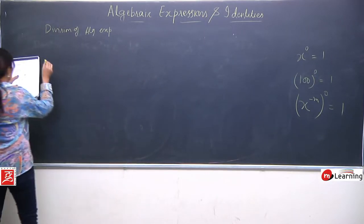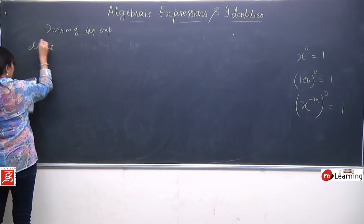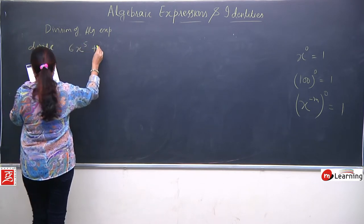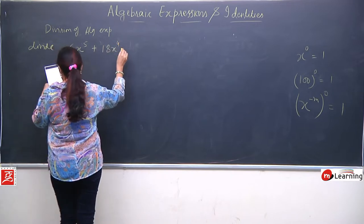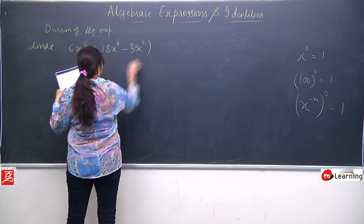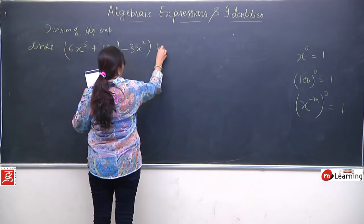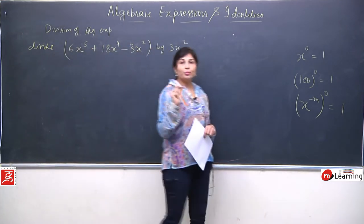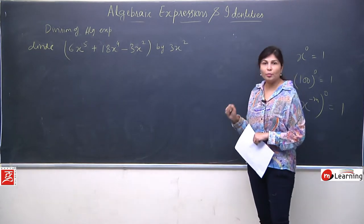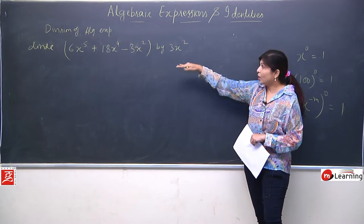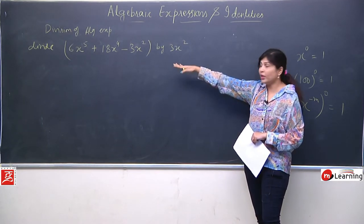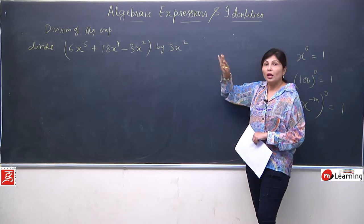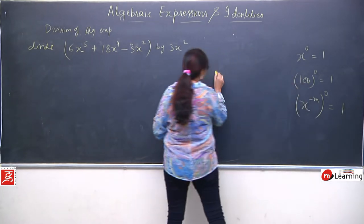Next question mein humare paas ek divide expression hai: 6x to the power 5 plus 18x to the power 4 minus 3x square, divided by 3x square. Isse pehle jo humne questions liye the, woh simple monomial the. Unke beech mein koi plus ya minus sign nahi tha. Ab humare paas trinomial hai — yeh 3 quantities hain, 3 terms hain. To yeh trinomial ho gaya. To solve karne se pehle main aapko ek simple sa example doongi.